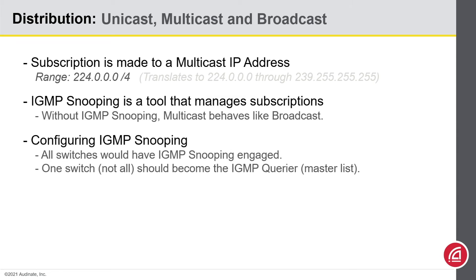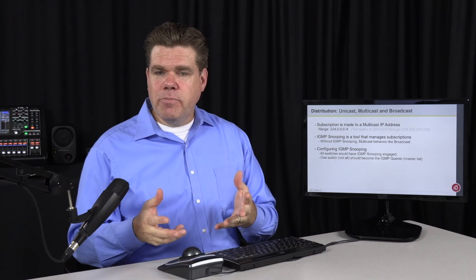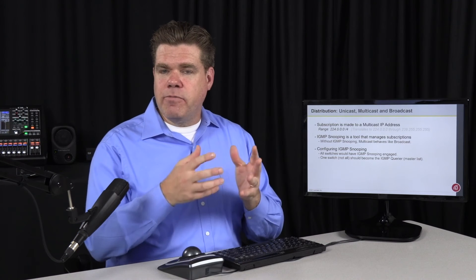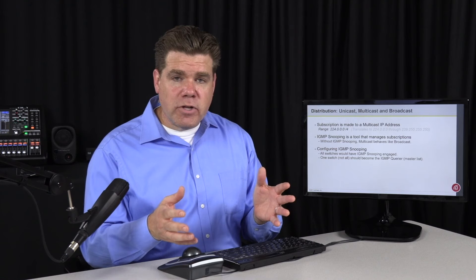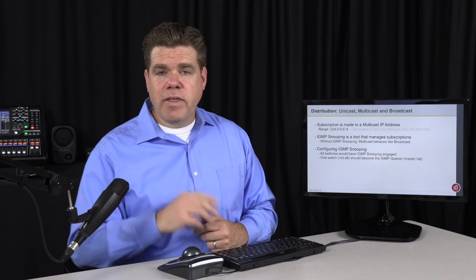When configuring IGMP snooping, you probably want to turn it on on all switches. However, there is a feature called the IGMP Querier. The IGMP Querier will be the device that keeps the master list of where all of the Multicast subscriptions go. So you'll want all switches to have IGMP snooping engaged, but only one of them would be the IGMP Querier.